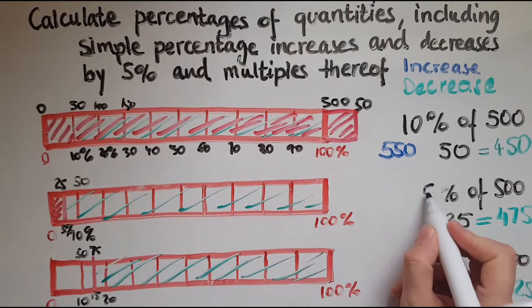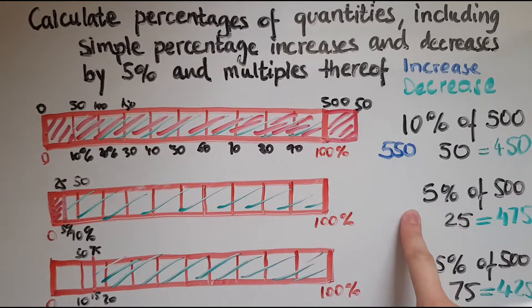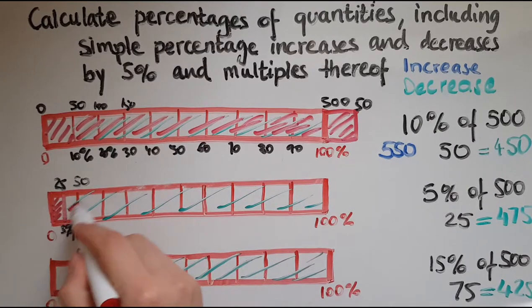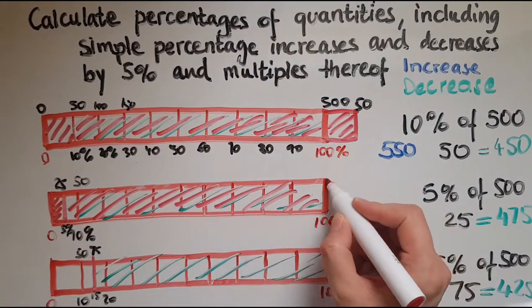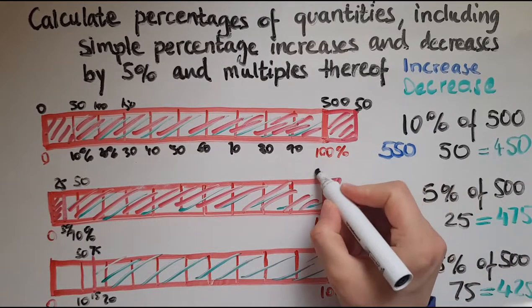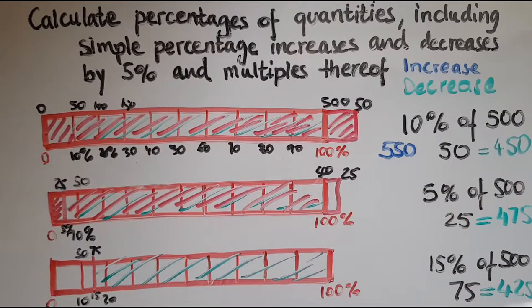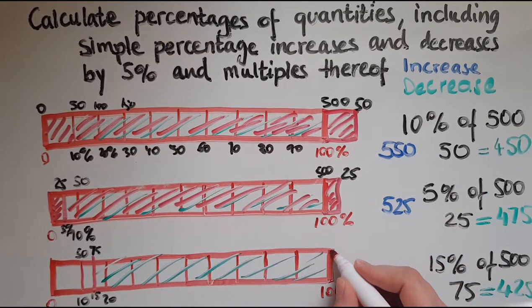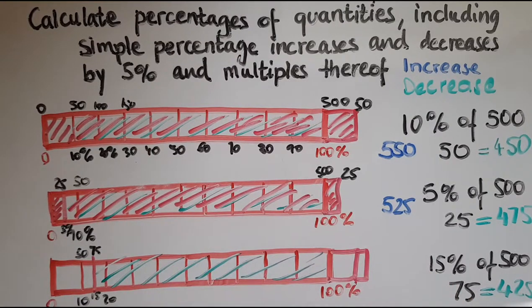And if I look at an increase of 5%, that means I've got the 500 already and I'm adding 5% on top. And we said 5% was equal to 25. So there is the 500, I'm going to add the 25, so that's going to make 525. And if I now look at 15%, so I'm going to add 10% and the 5%, so altogether that was 75. So that's going to be on top of the 500 to make 575.